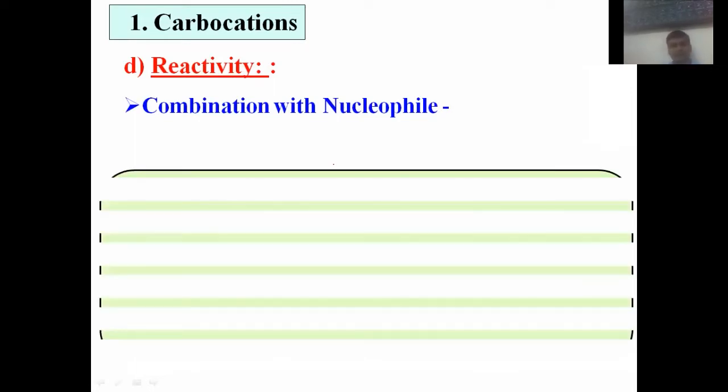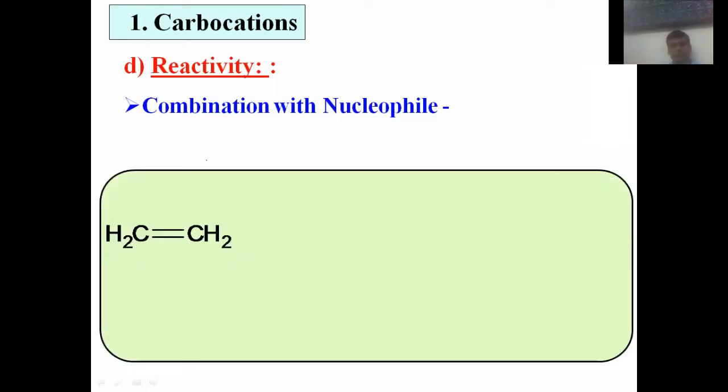The first reaction is combination with a nucleophile. Carbocation has a positive charge, so it is an example of an electrophile, and therefore it can easily combine with a nucleophile. Consider the simple example of ethylene — CH2=CH2 — when it comes in contact with HCl. Addition of HCl takes place across the C=C double bond.